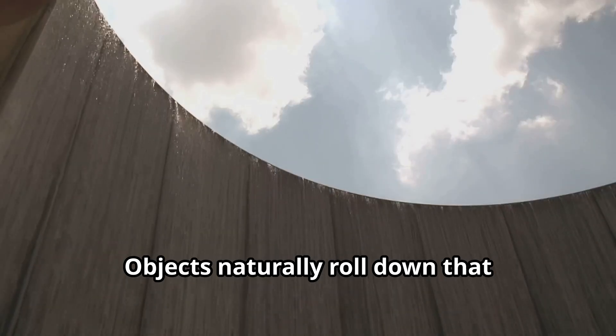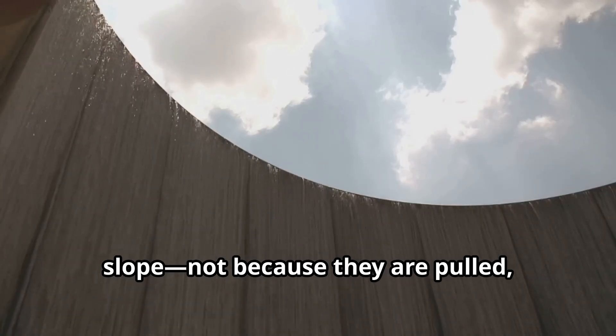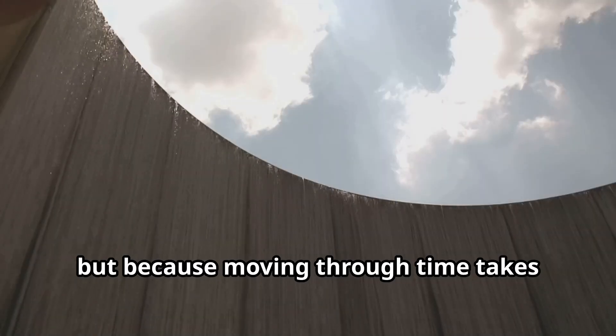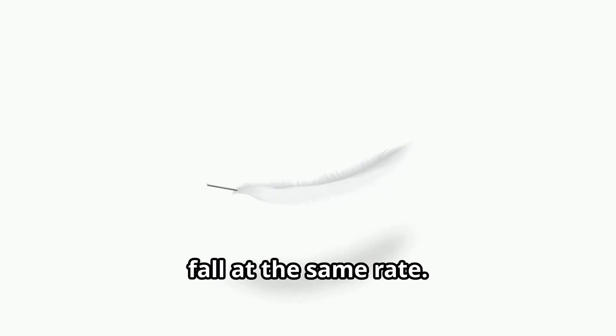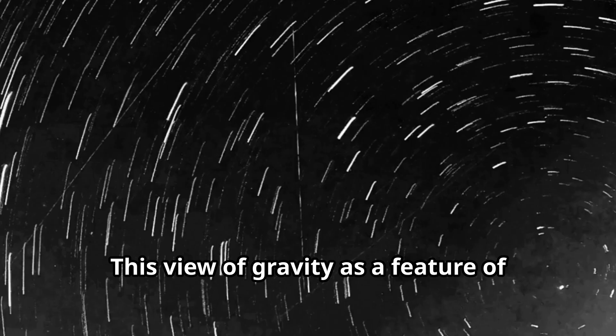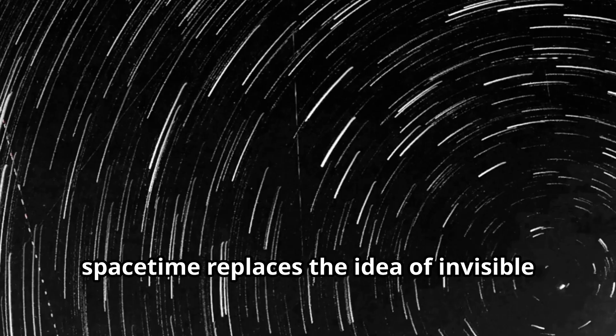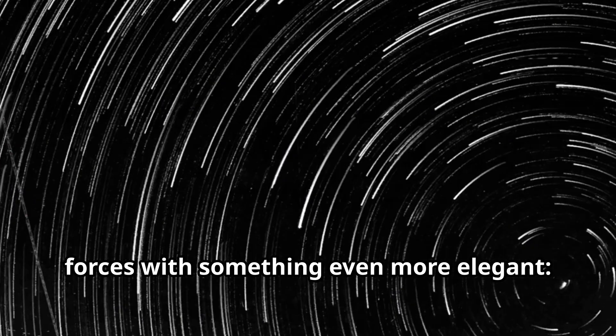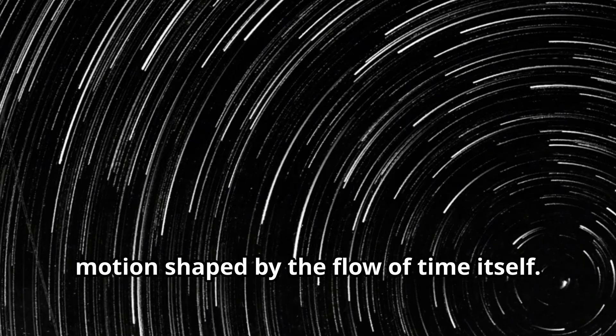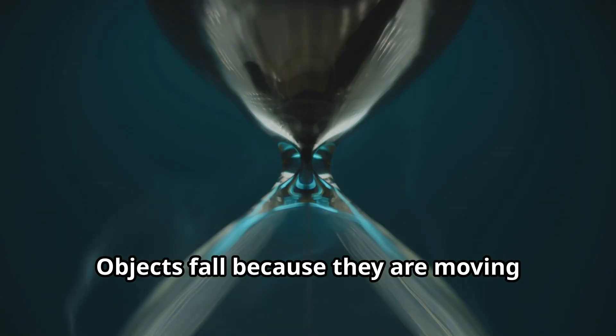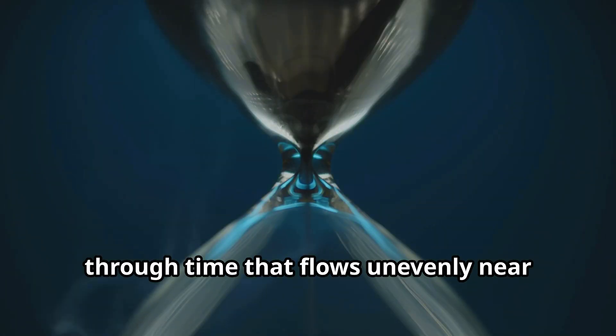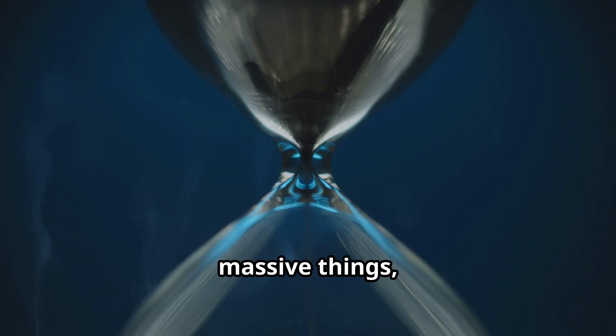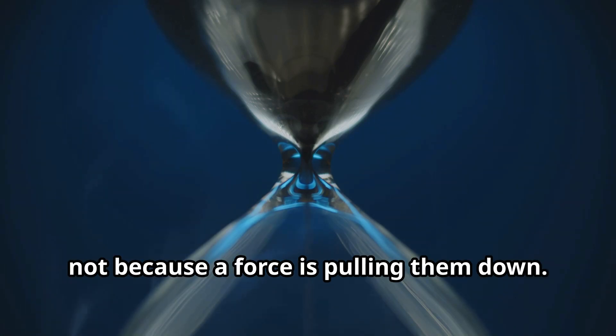Time becomes slower near these objects, and that slower time acts like a slope. Objects naturally roll down that slope, not because they are pulled, but because moving through time takes less effort in that direction. This helps explain why all objects, no matter their weight, fall at the same rate. This view of gravity as a feature of space-time replaces the idea of invisible forces with something even more elegant, motion shaped by the flow of time itself. Objects fall because they are moving through time that flows unevenly near massive things, not because a force is pulling them down.